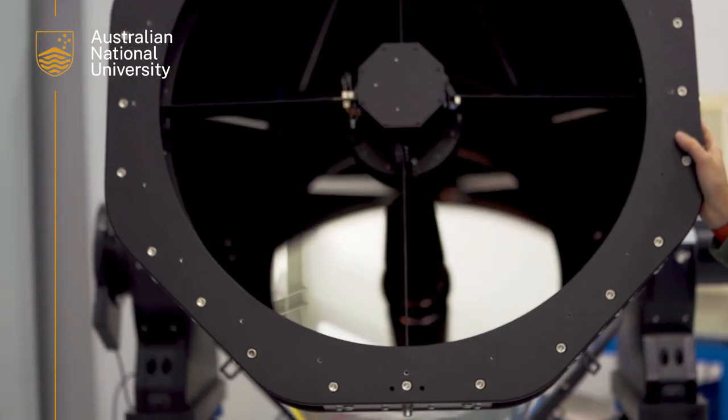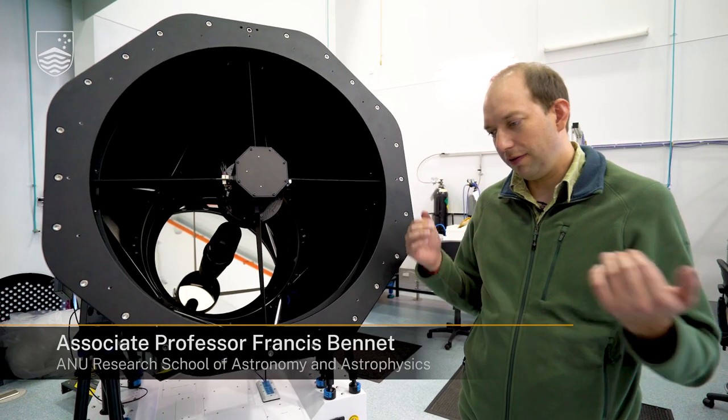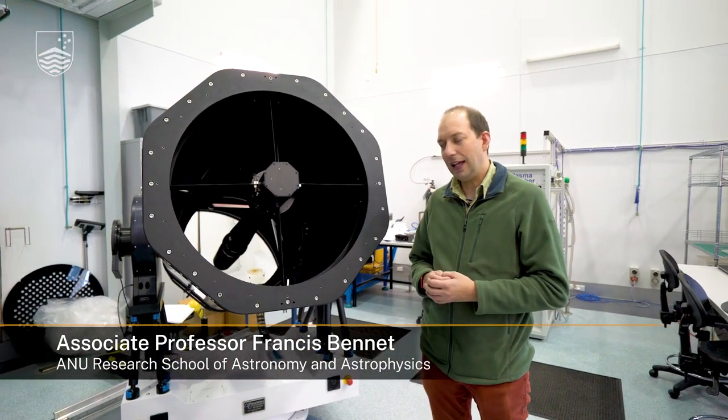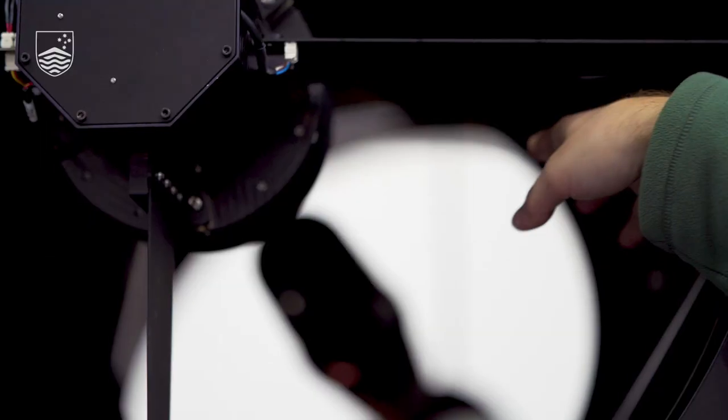This mirror is about 70 centimeters in diameter and it's curved to a very particular shape within fractions of a wavelength, and that allows it to form an image at the right place for our instruments.